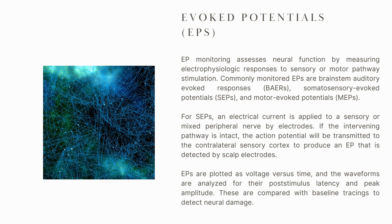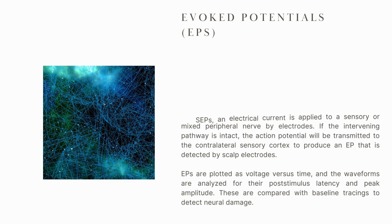For SEPs, an electrical current is applied to a sensory or mixed peripheral nerve by electrodes. If the intervening pathway is intact, the action potential will be transmitted to the contralateral sensory cortex to produce an EP that is detected by scalp electrodes. EPs are plotted as voltage versus time, and the waveforms are analyzed for their post-stimulus latency and peak amplitude. These are compared with baseline tracings to detect neural damage.